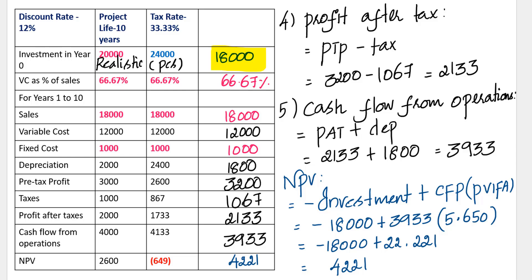Just have a look at this: when the investment is 18,000, the net present value is 4,221; when it is increased to 24,000 for a pessimistic scenario, it gives us minus 649; and when it is 20,000 for the expected scenario, it gives us 2,600. The crux of the problem is: the more money we invest, the lesser the net present value, and vice versa. Similarly, you can keep all other variables the same and change one variable at a time. Thanks for joining me — stay tuned for more such videos. This is Karpa Kams signing off. Good day.